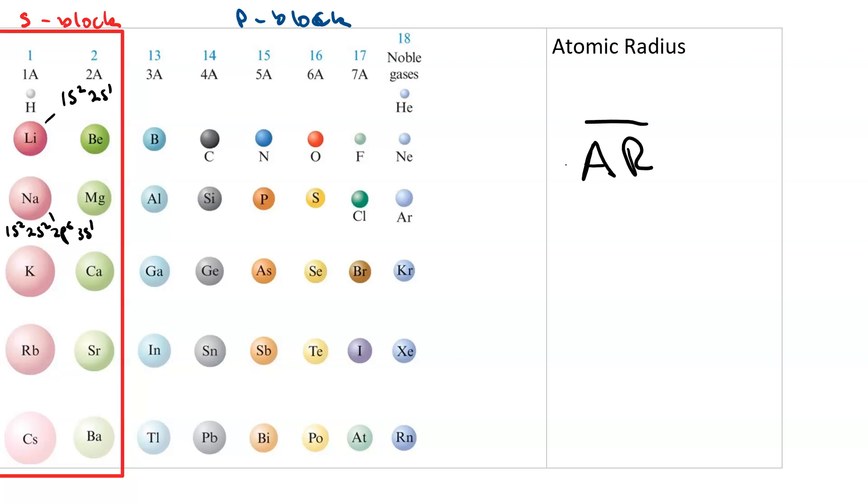This is how I remember the trend in atomic radius. It gets bigger as you go to the left and as you go down. Now, the reason atomic radius gets bigger as you go down is because the n value is increasing. And the reason it gets bigger as you go to the left is because there were fewer protons in the nucleus. And so the amount of charge that the valence electron sees decreases.